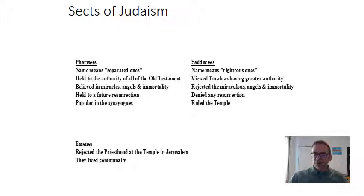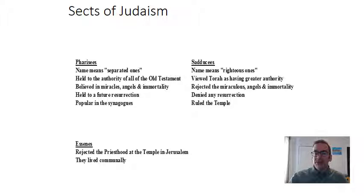An important difference is that the Sadducees' power base was the Second Temple in Jerusalem — they ruled from that temple. The Pharisees, however, were associated with synagogues, which are small religious buildings similar to Christian churches. This is a crucial distinction, because when the Romans came in and destroyed the temple, they greatly reduced the power of the Sadducees.